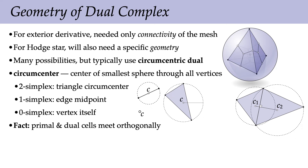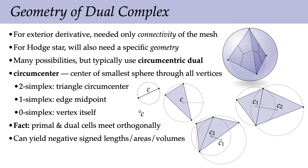One caution with the circumcentric dual: you can get negative signed lengths and areas. If a triangle has a very large obtuse angle, its circumcenter can be outside the triangle — there's no reason the circumcenter must be inside the simplex. These negative volumes can be a nuisance in computations. For that reason, people have come up with other notions of dual, other places to put dual vertices.